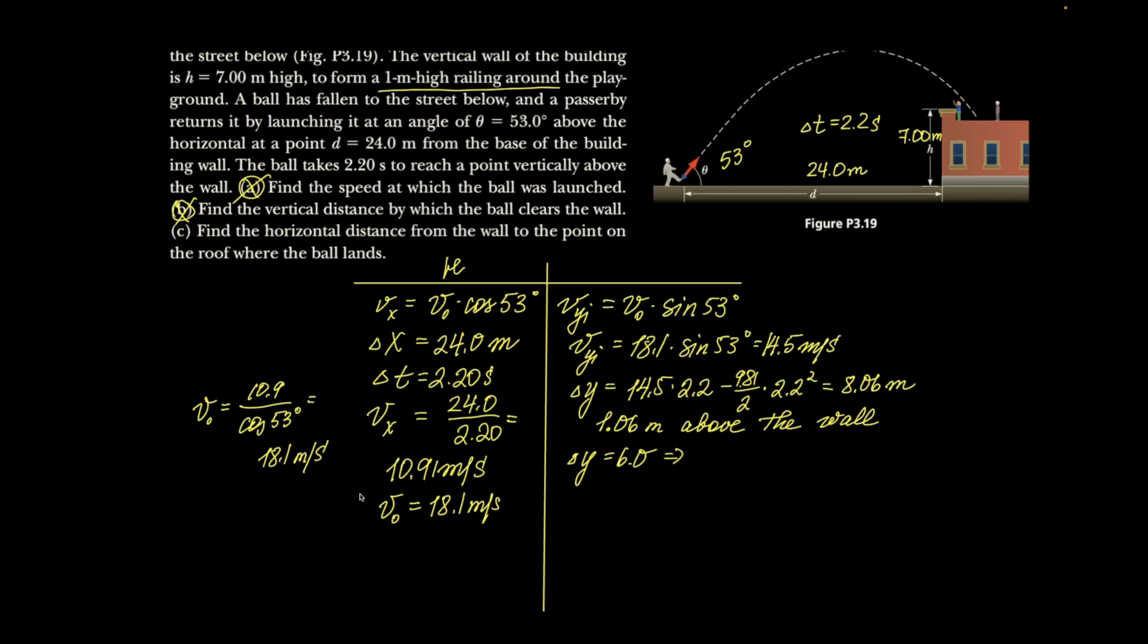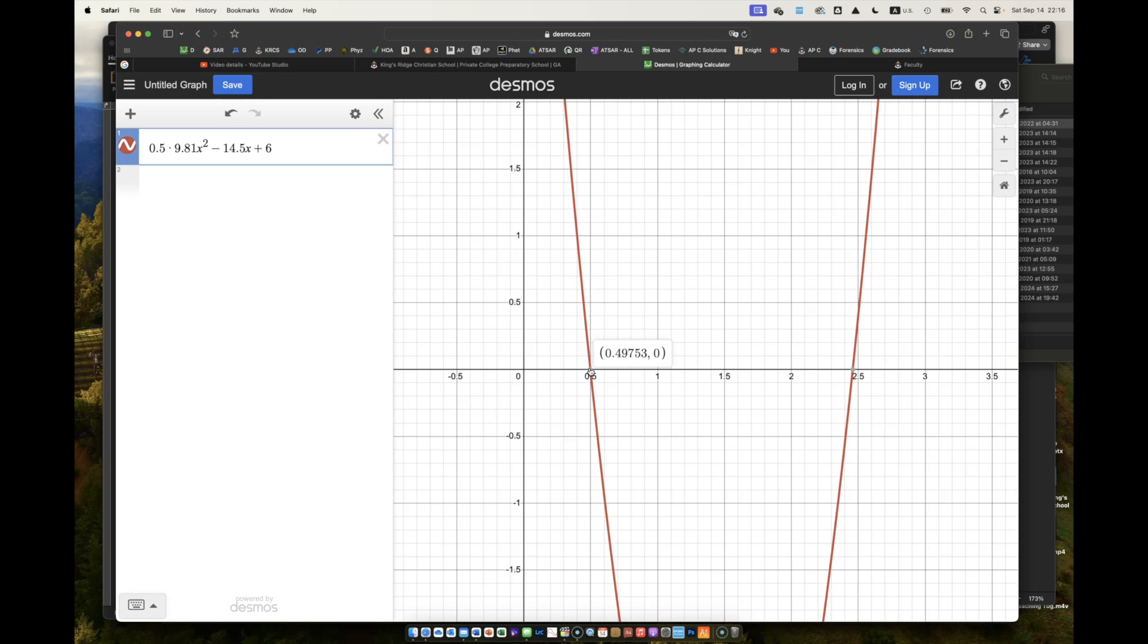And from there, I'm going to say 6 equals 14.5 times t minus, again, 9.81 over 2 times t squared. And then, I'm going to just graph that 0.498, almost 0.5, and change in t is nearly 2.5, which is 2.46.